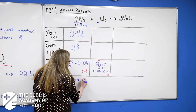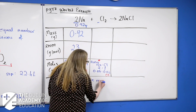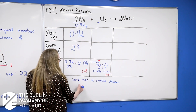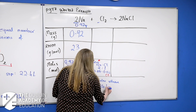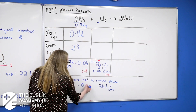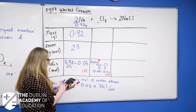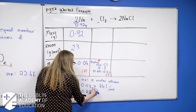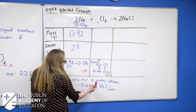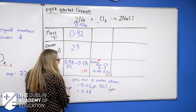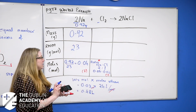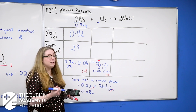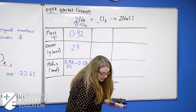The volume equals moles multiplied by the molar volume. Double-check: this is at RTP, so the molar volume is 24 litres per mole. 0.02 × 24 = 0.48. Units: moles × litres per mole — the moles cancel, leaving litres. So the answer is 0.48 litres. If the answer is needed in cm³, multiply by 1000.